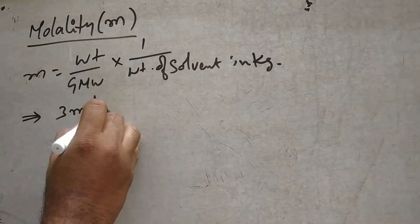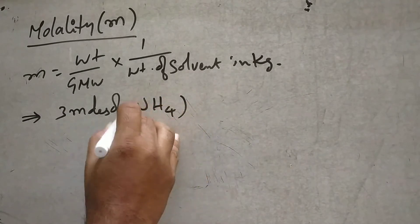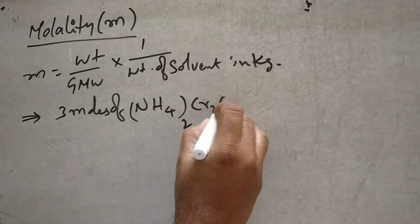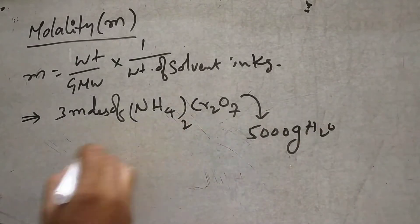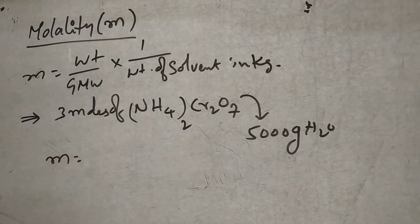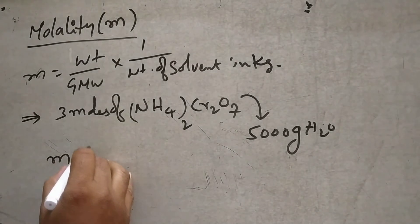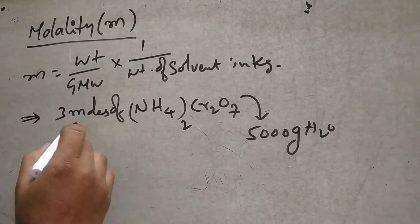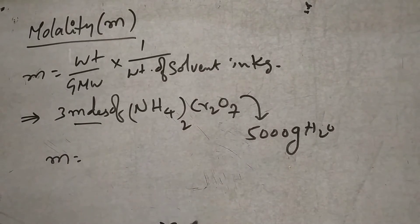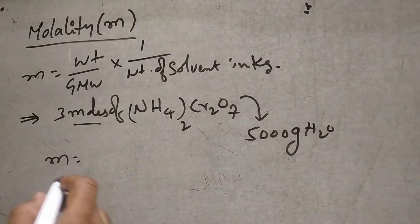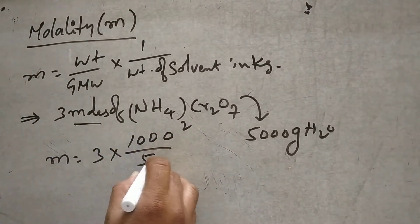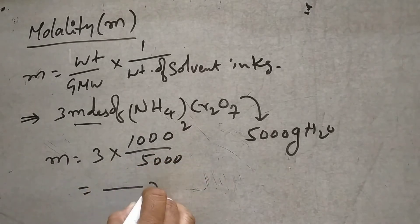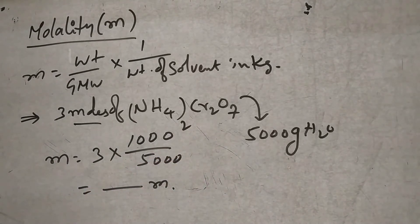Next problem: 3 moles of ammonium dichromate is dissolved in 5000 grams of water. Calculate the molality. Since moles are given directly, molality equals 3 into 1000 divided by 5000. You will get the answer: 3 into 1000 divided by 5000.